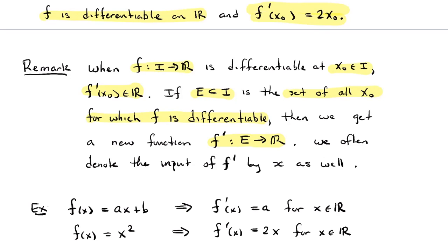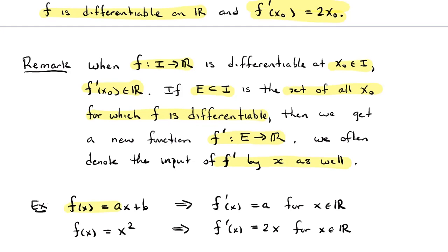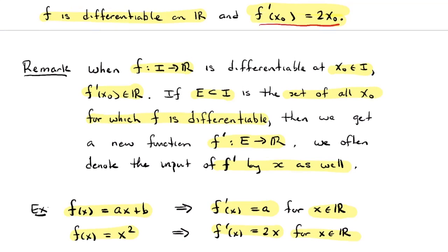It's very often the case that we just denote the input of f prime by the same variable we denote the input of f, in particular by x. So in that notation, our examples above: if I take the linear function f(x) = ax + b, I'll just write f prime of x is a. Of course, it doesn't matter what I call the input of a function. If f(x) = x², then f prime of x = 2x. You could phone up any friend in Calculus 1 — they'd tell you that's the formula they know. The version where I was writing f prime of x₀ looks a little weird because I was emphasizing the derivative at some point called x₀, but of course the name of the variable is irrelevant.